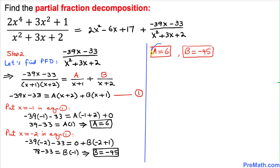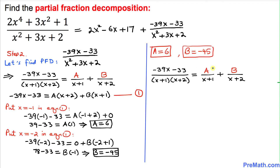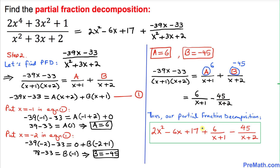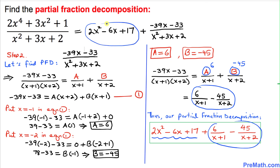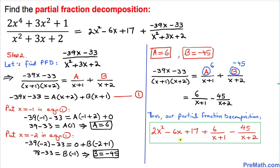So A = 6 and B = −45. Replacing these in our partial fraction decomposition, the final complete answer is 2x² − 6x + 17 + 6/(x + 1) − 45/(x + 2). Thanks for watching, and please don't forget to subscribe to my channel for more exciting videos. Bye!